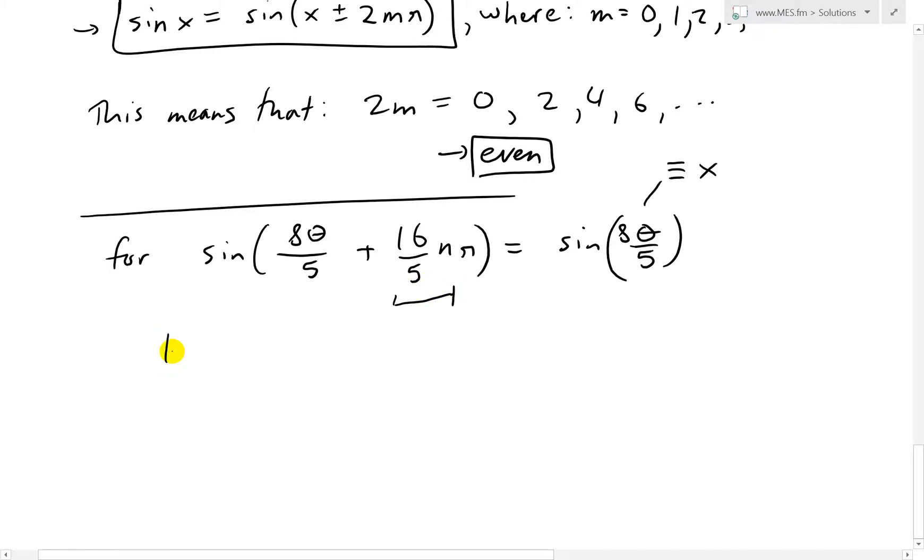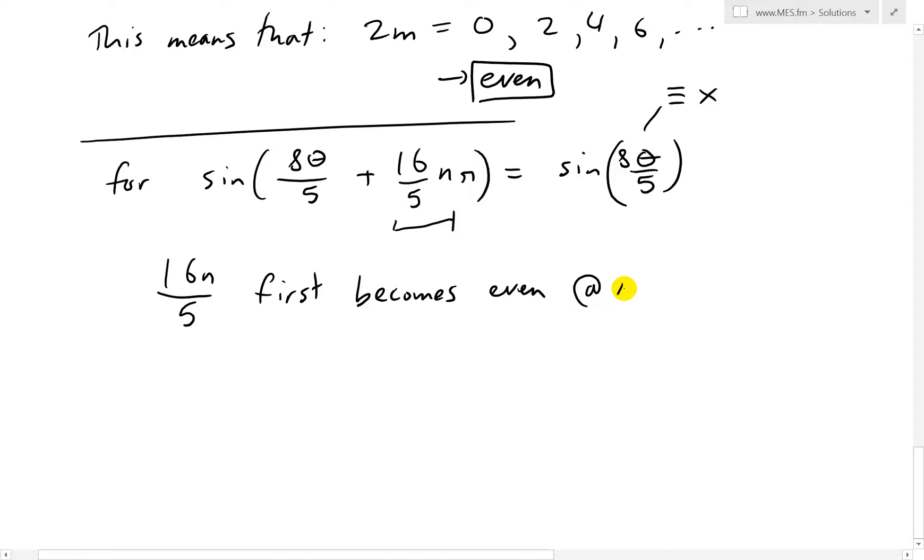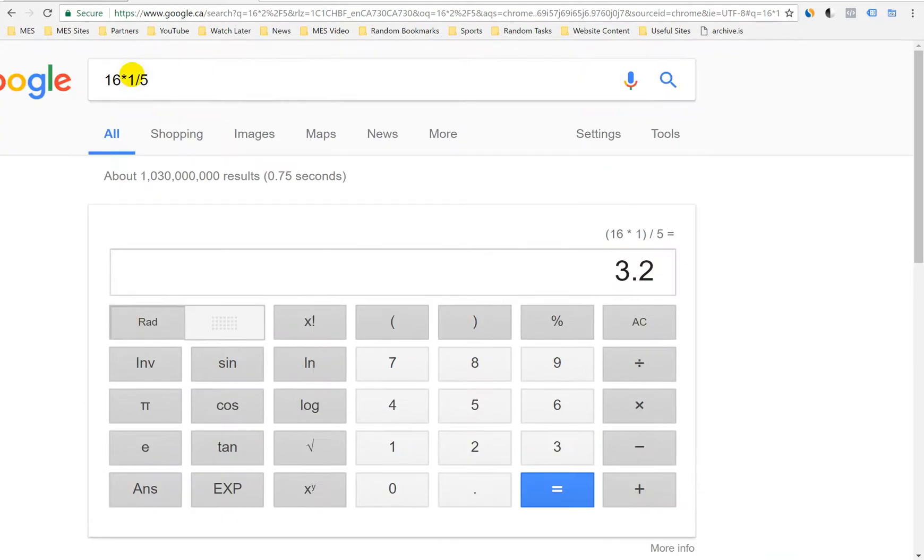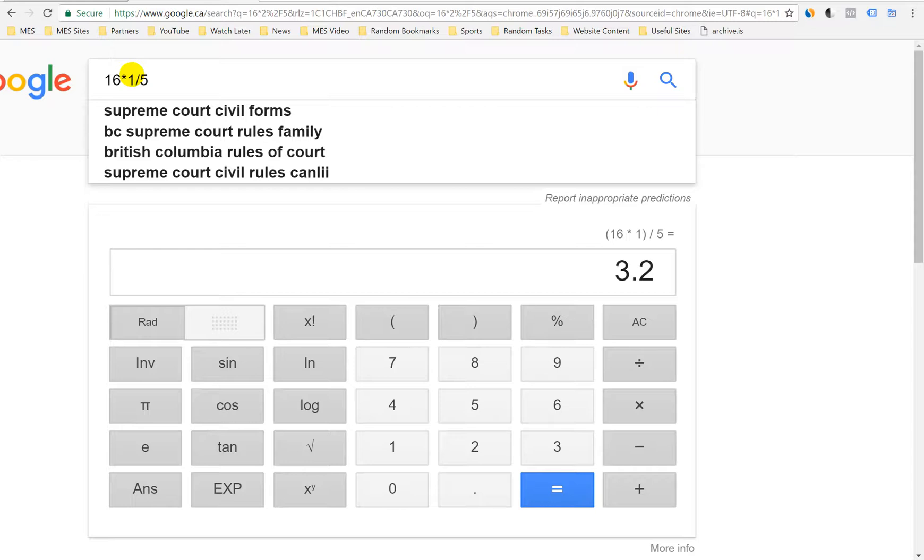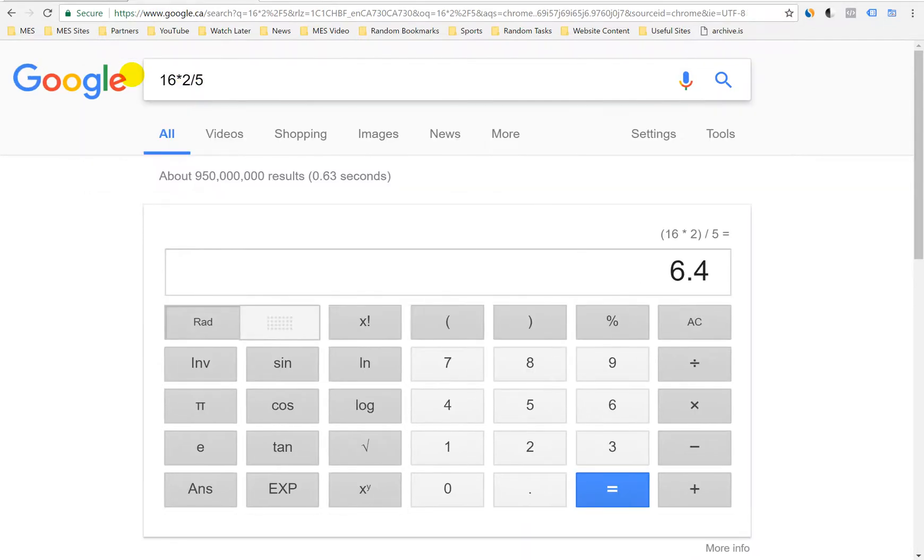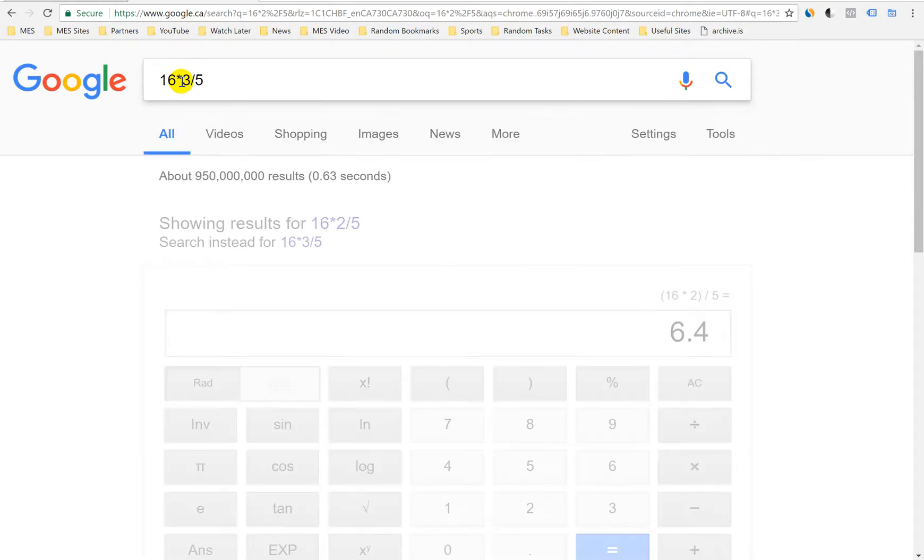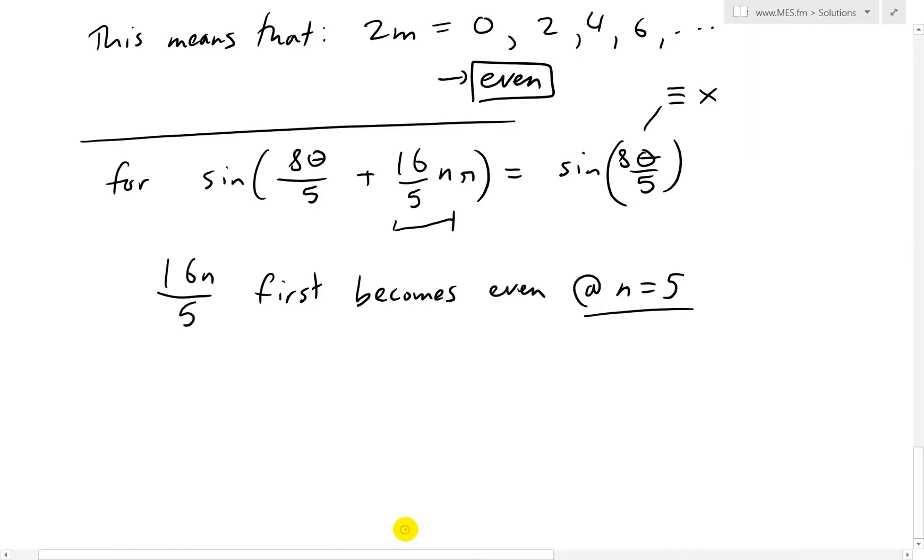So 16n/5 first becomes even. If you look at it, 16/5 doesn't divide evenly. And it first becomes even at n = 5. So those just cancel out. 16 times 5 divided by 5, it just becomes 16. And you can verify this by going to just a calculator here. Here's the Google calculator. So 16 times 1 over 5 is 3.2. It's not an even whole number. So we go 2. 6.4. And 3 is going to be 9.6. You can do this by hand or just type it out like this. 12.8. And then the 5, they just cancel. So we have 16. So that's an even whole number there.